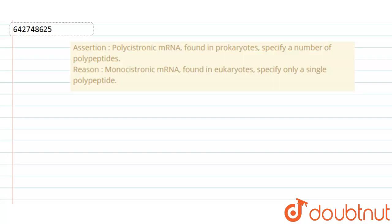In a certain form, the assertion is: polycistronic mRNA found in prokaryotes specify a number of polypeptides. And the reason is: monocistronic mRNA found in eukaryotes specify only a single polypeptide, means single protein.